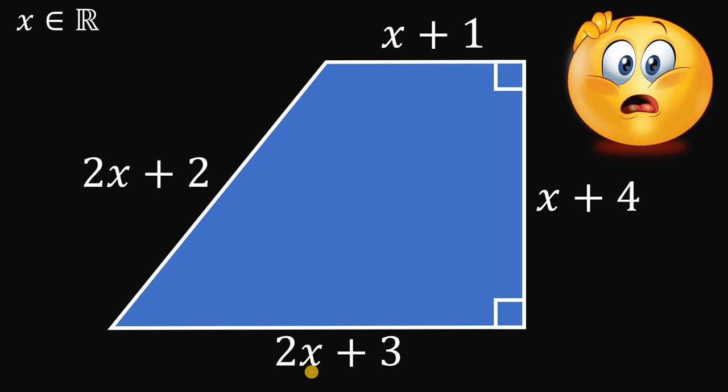Given this trapezoid with the side length 2x plus 2, x plus 4, x plus 1, and 2x plus 3, where x is a real number, then our goal is to find the area of this trapezoid.